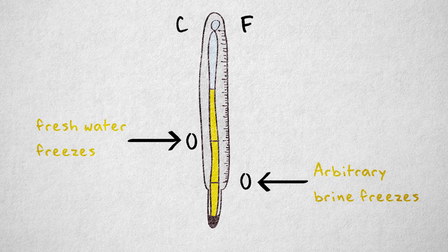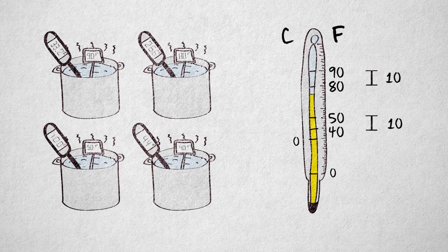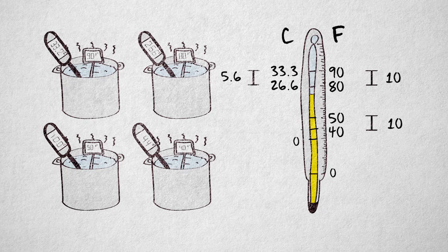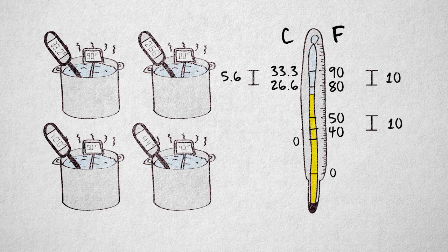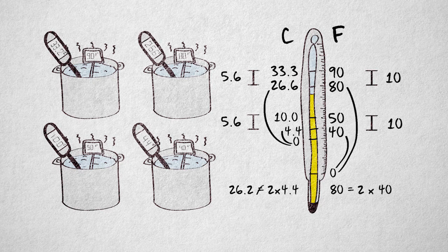If we consider the same temperatures as before, but now in degrees Celsius, we see that 32.2 minus 26.6 is 5.6. Just like 10 minus 4.4 is 5.6. But 26.6 is nowhere near twice 4.4. This is because the scales use different zero points.